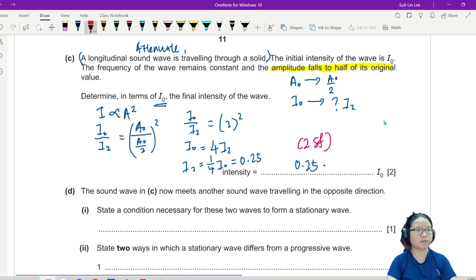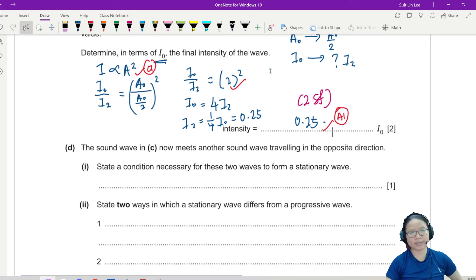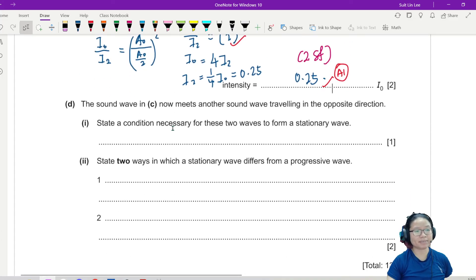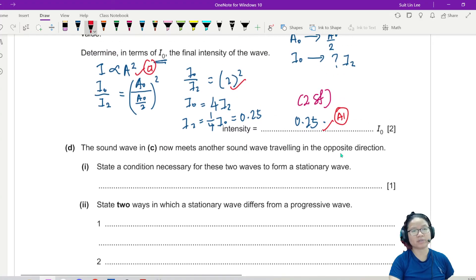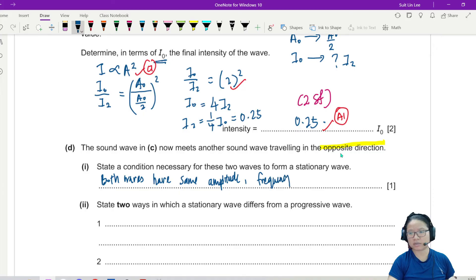So if you write intensity is proportional to amplitude squared, this is C1. You use the ratio correctly, leading to the final answer is A1. So practice. This one is also very popular. Part D. The sound wave in C now meets another sound wave traveling the opposite direction. Now I see like that, stationary wave. State a condition necessary for these two waves to form a stationary wave. So a lot of things need to be the same. They should have, both waves should have same amplitude, frequency, wavelength. You state one is good enough.